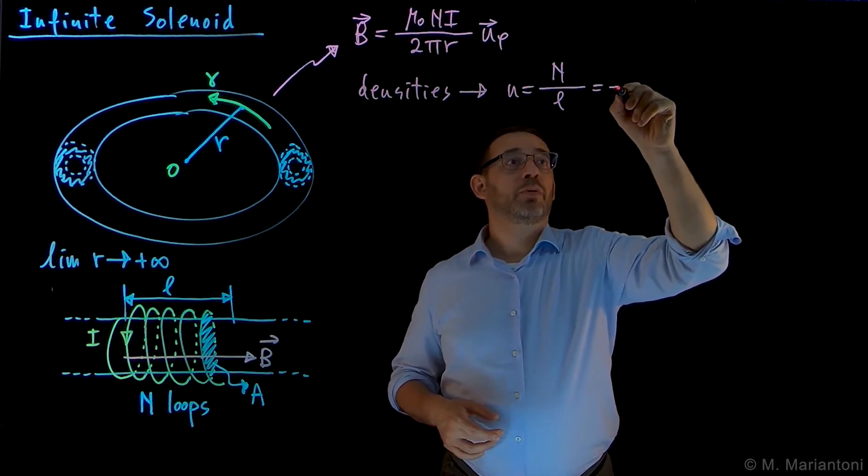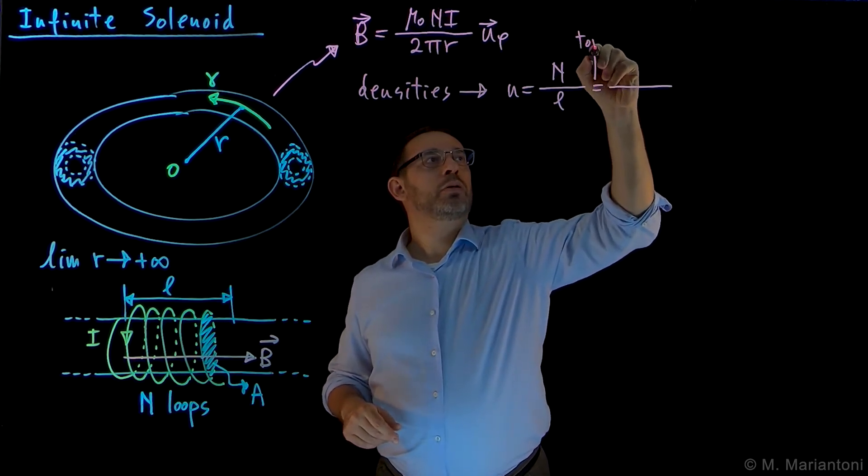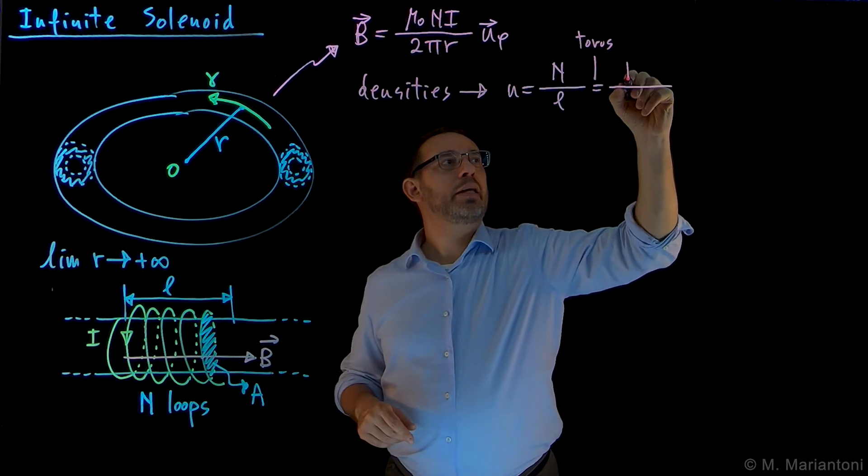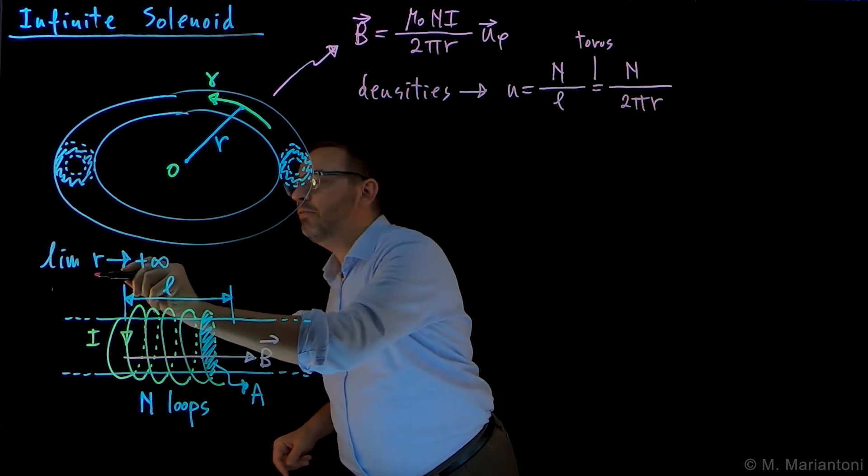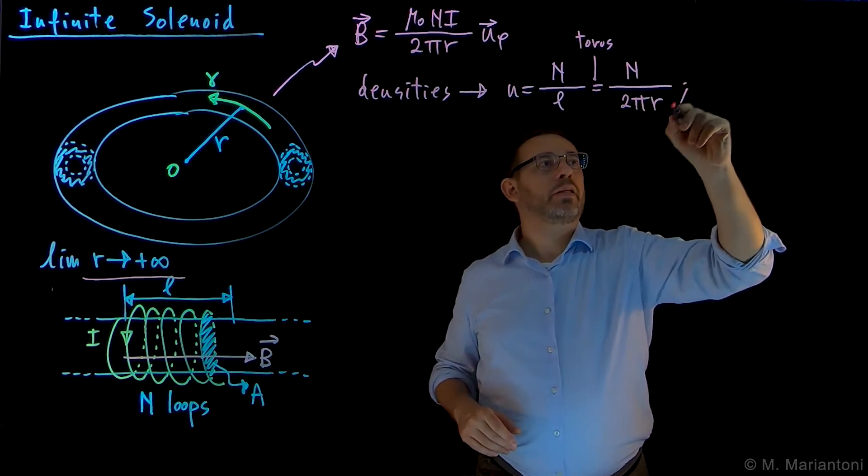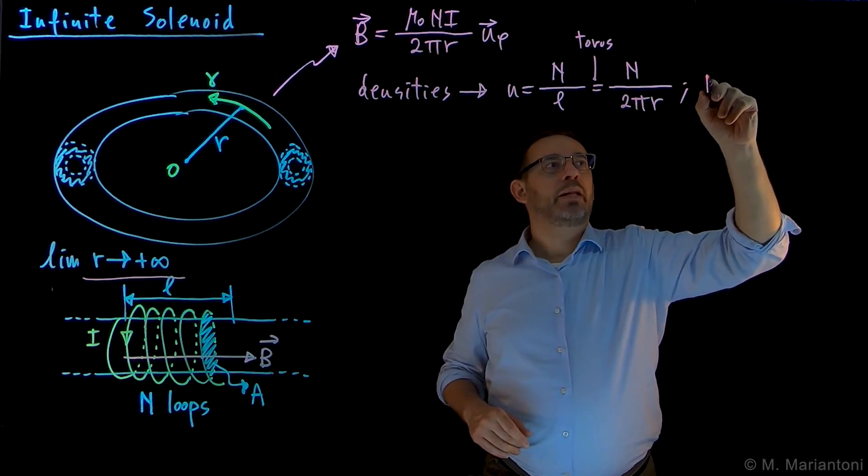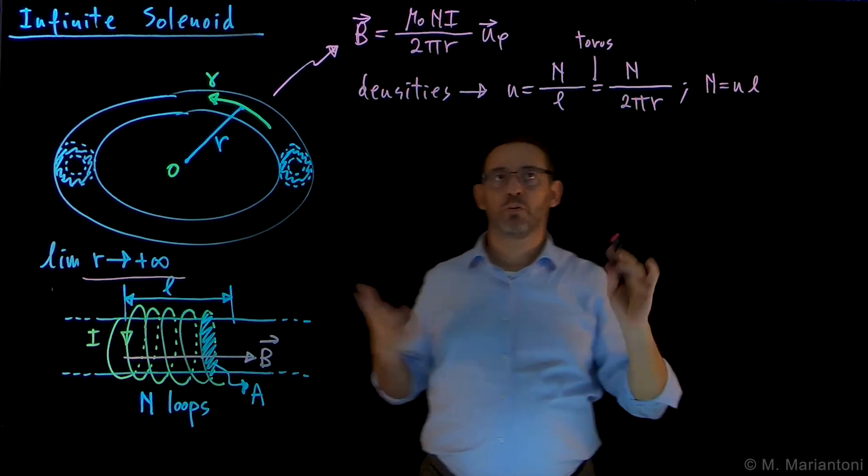This, in fact, can also be written in the case of the toroidal solenoid as n divided by 2 pi r, and then eventually we need to go in the limit for r that goes to plus infinity to reconcile everything here. And this also means that capital N can be written as small n times the length L, so we will use all of that.